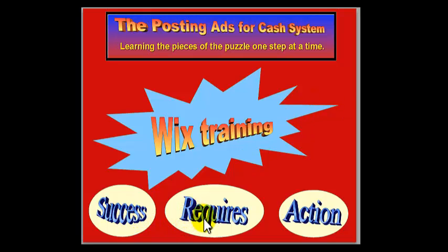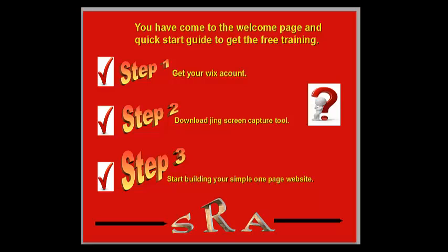Success requires action. You have come to the welcome page and quick start guide to get the free training. Now, if you have bought into the system, this is still free — this is an extra. But if you have decided not to buy into the system and you just want the free training, this is still for you. Step 1: Get your Wix account. Step 2: Download the Screen Capture Tool. Step 3: Start building your simple one page website. S-R-A — Success requires action.